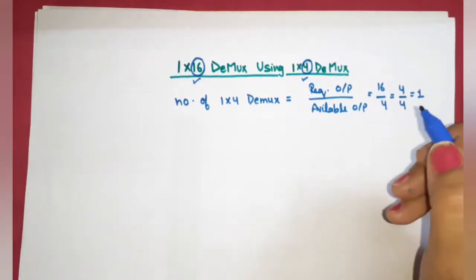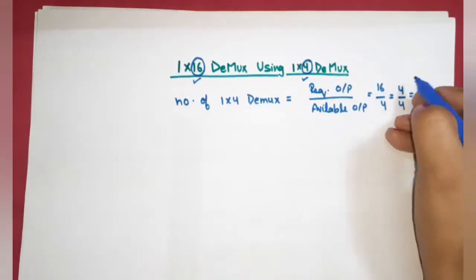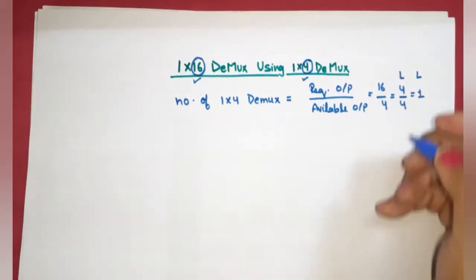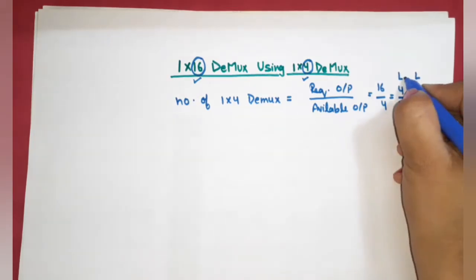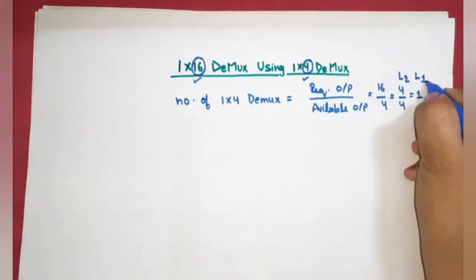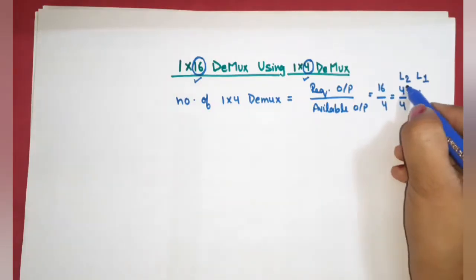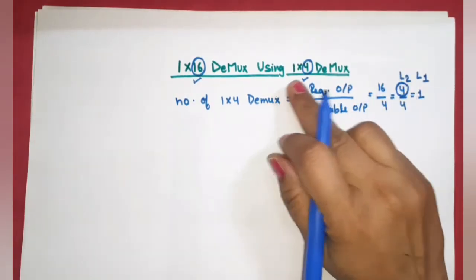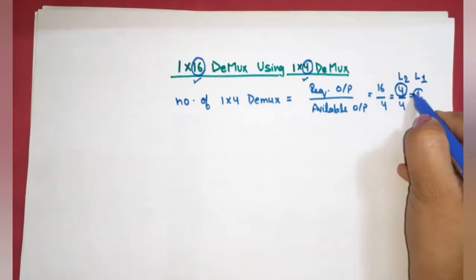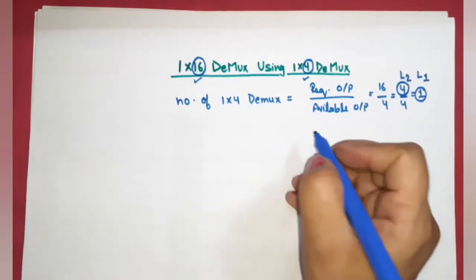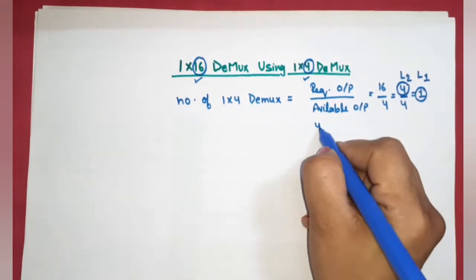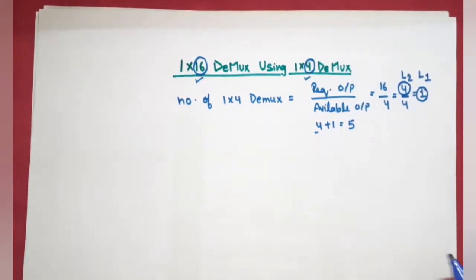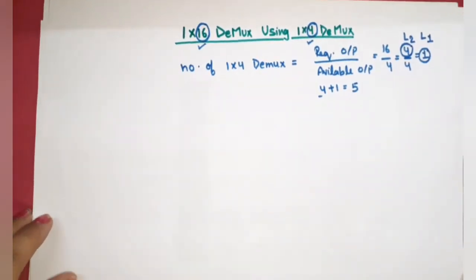This means we will use 2 levels — label 2 and label 1. At label 2 we will use 4 demultiplexers, and at label 1 we will use 1. So total required = 4 + 1 = 5 demultiplexers.